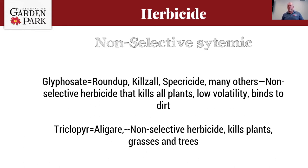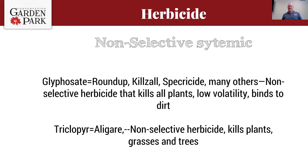Non-selective systemics will kill pretty much anything they touch. Glyphosate — known as Roundup, Killzall, or Spectracide — is non-selective and systemic. It has low volatility so you can use it in slightly hotter temperatures, but it binds to soil, so spraying dirty plants means it binds to that soil and doesn't get into the plant. Triclopyr (Alligare) is a non-selective herbicide that kills plants, grasses, and can even kill trees.